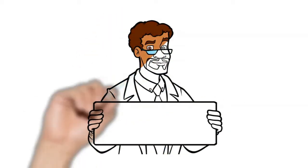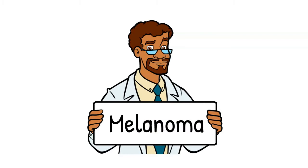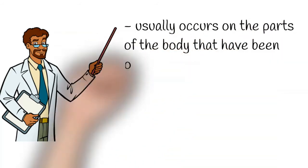Hey there, in this short video, we will discuss melanoma. What is melanoma? It is a type of skin cancer which usually occurs on parts of the body that have been overexposed to the sun. Rare melanomas can occur inside the eye or in parts of the skin or body that have never been exposed to the sun.